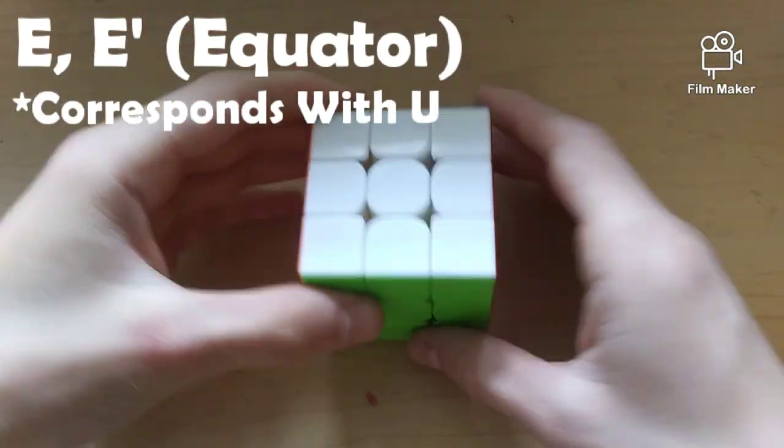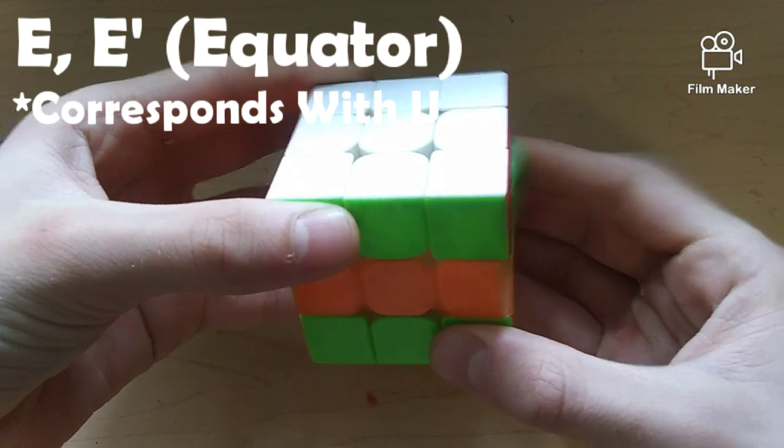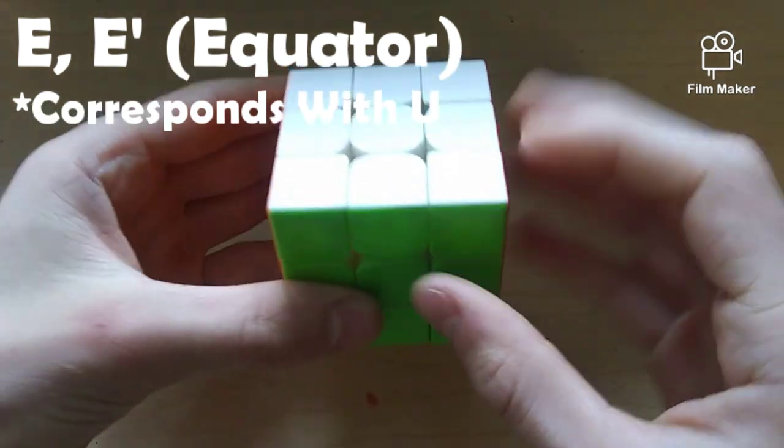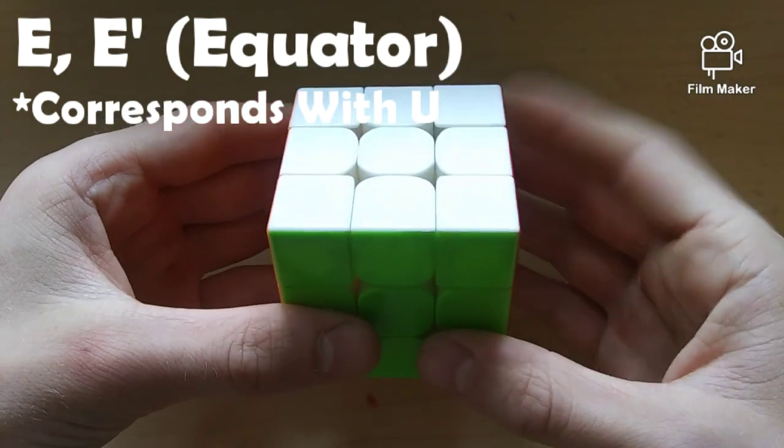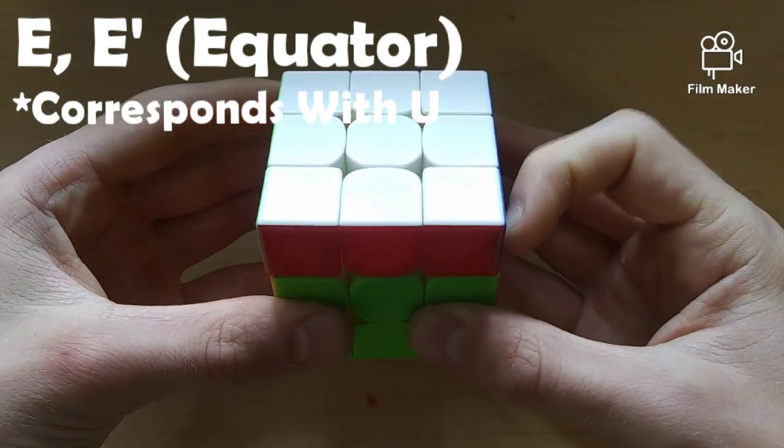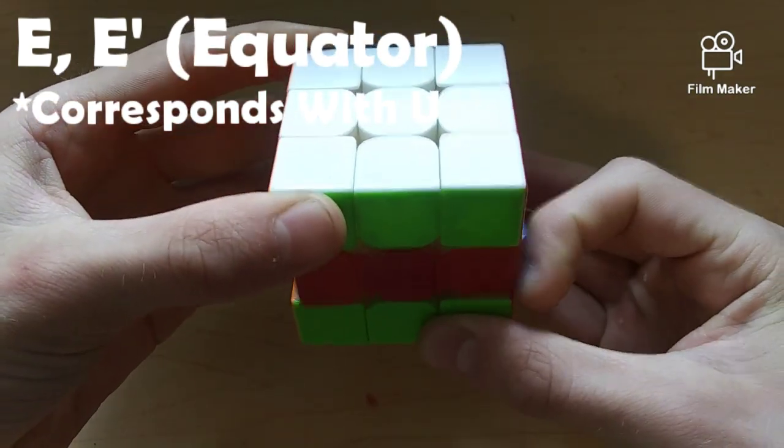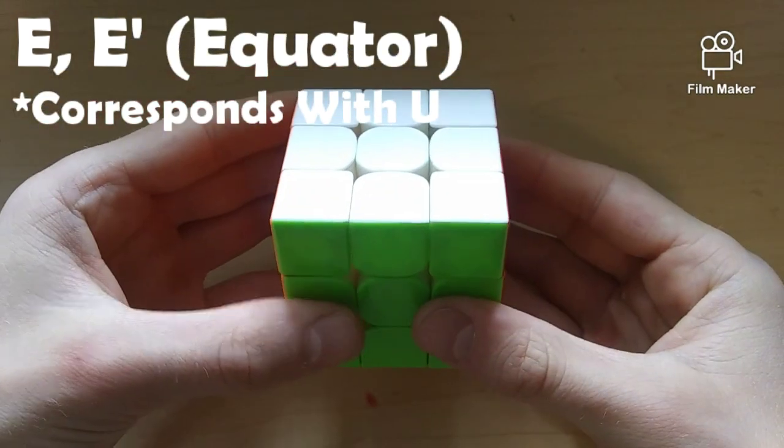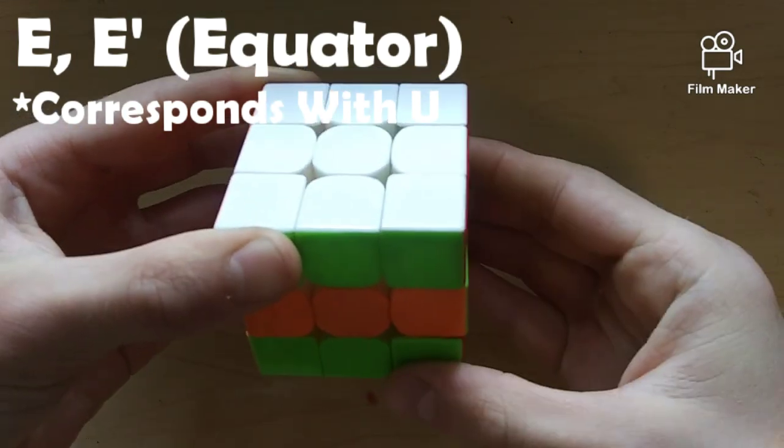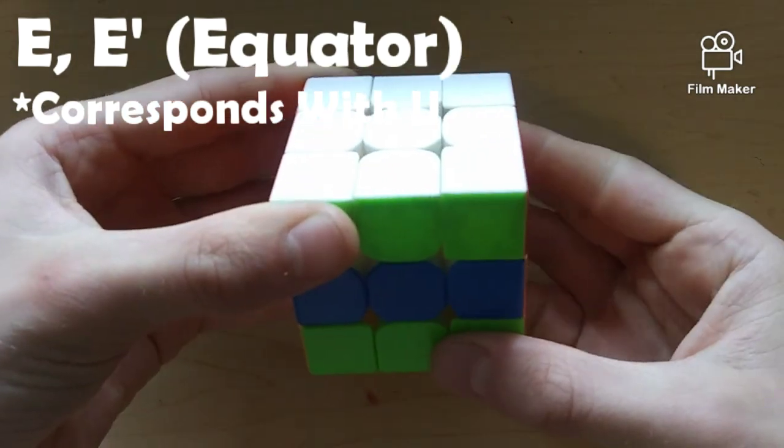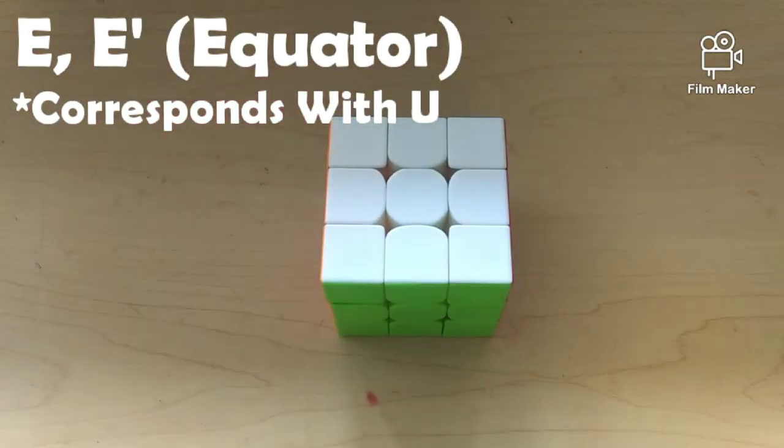Next up, we have the E slice move, which again means equator. And this move is corresponding to the U side, or the upper side. So, if you want to do an E, you think U. So, then E would also be that direction. If you want to do E', it's U' but on the middle layer. And then, you have E2, which just moves it twice, in either direction.